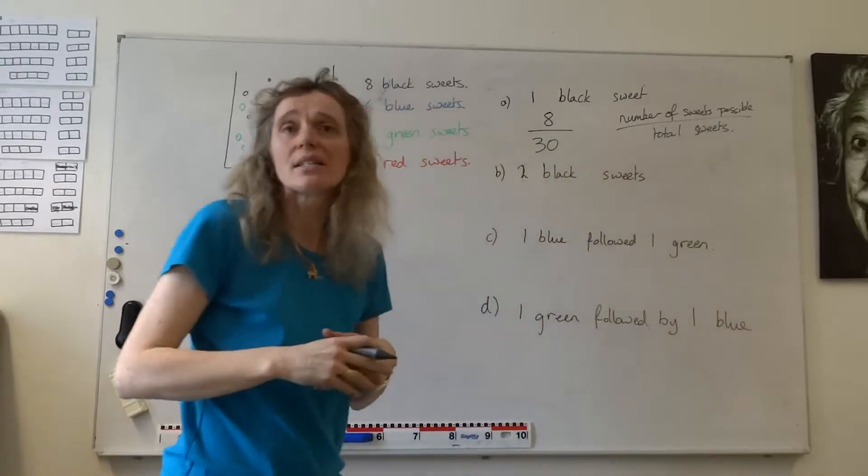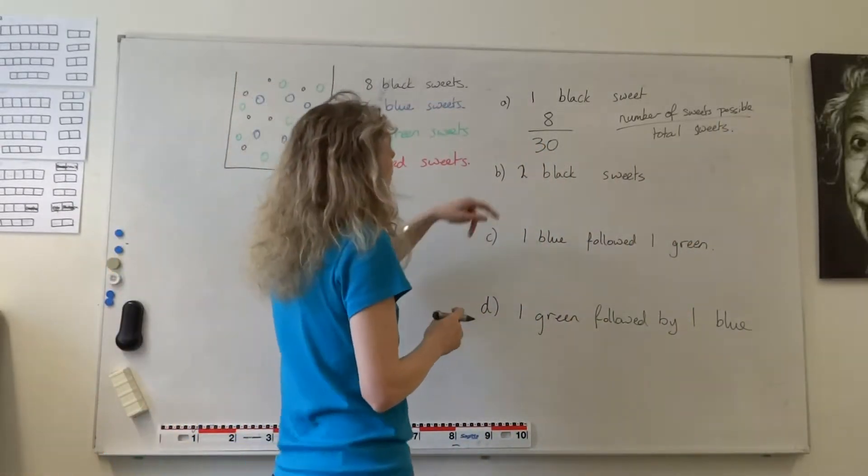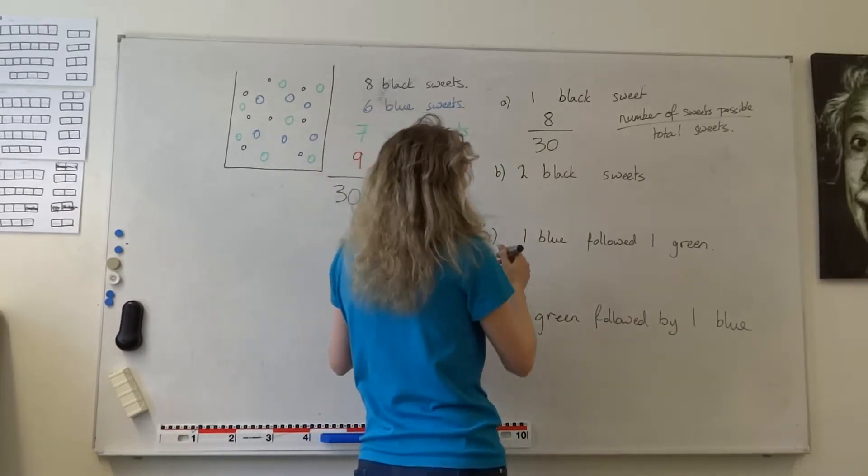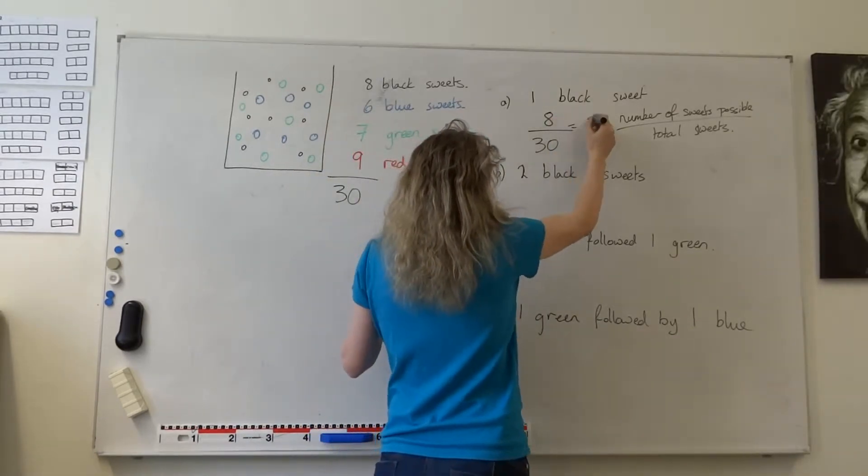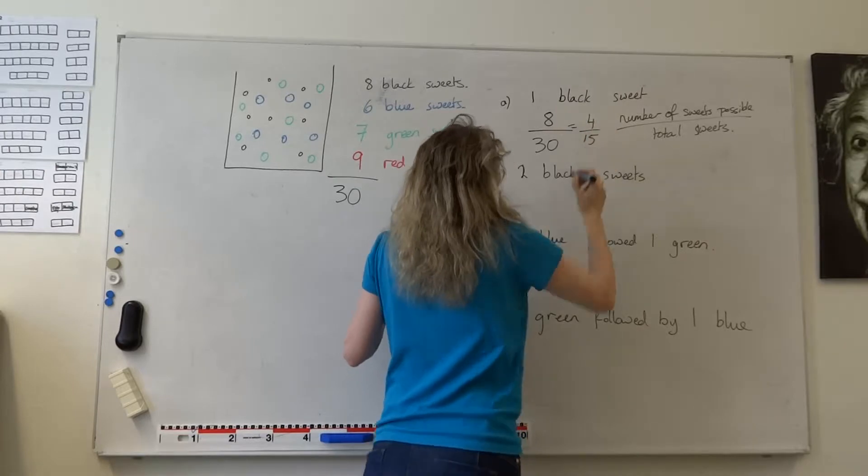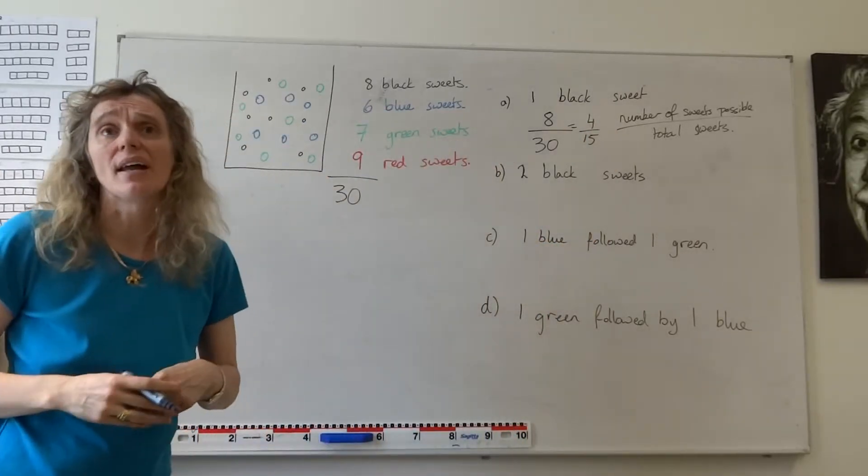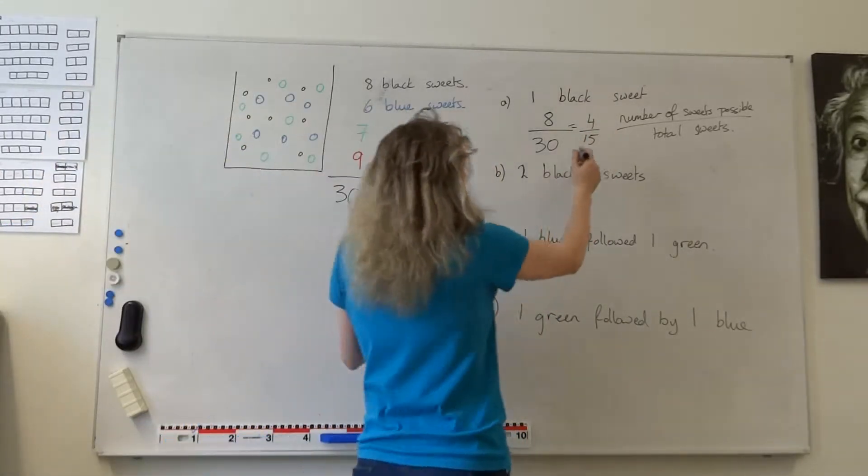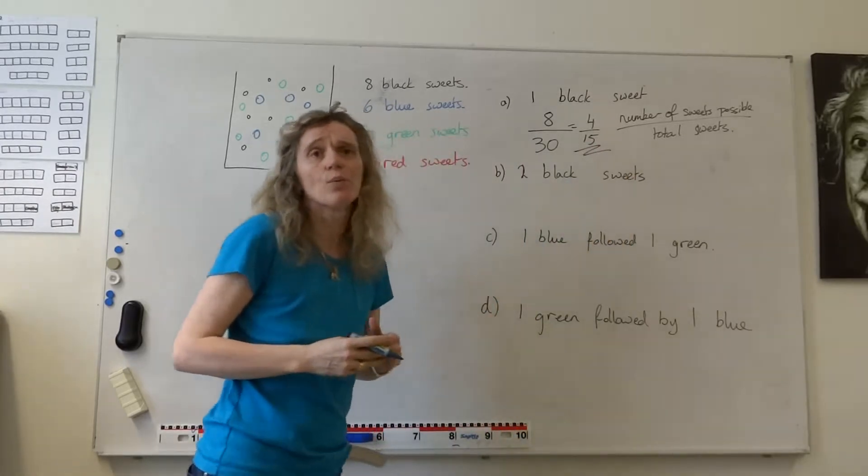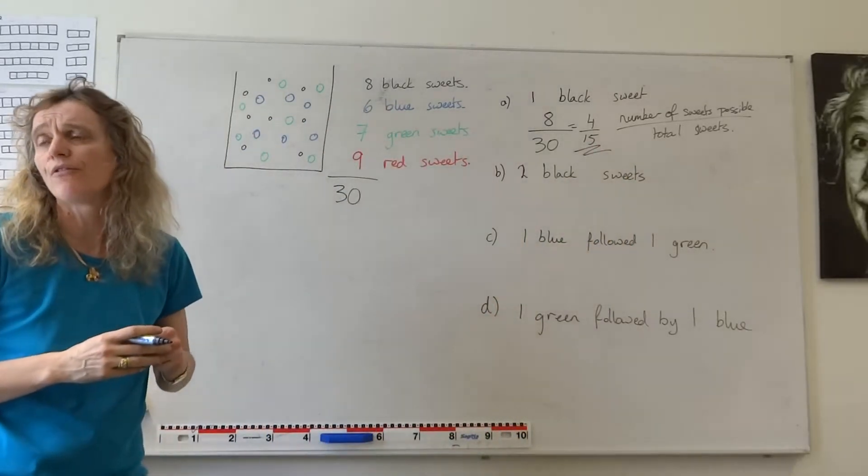And probabilities you often answer in fractions. So 8 thirtieths, could we simplify that? Well, yeah, we could simplify that to 4 fifteenths. And then we'd leave it like that often. So the chance of us getting one black sweet would be 4 chances out of 15.